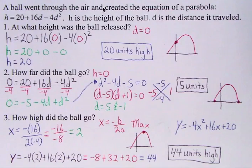A ball went through the air and created the equation of a parabola. Here's the equation of the parabola. H is the height of the ball, so this is the height of the ball. D is the distance it traveled, so D is the distance it traveled.